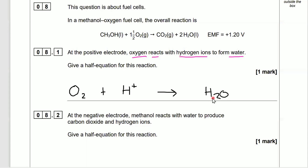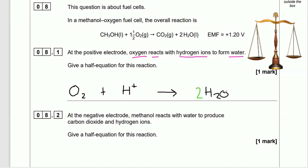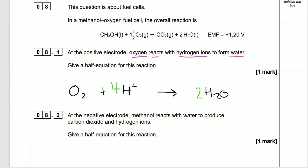Let's balance this up. Looking at the water, I've got one oxygen on the left and two in the products, so I'll start there. Put a 2 in front of H₂O to make two oxygens. That means I need a 4 in front of H⁺ to give four hydrogen ions. If I'd started by balancing hydrogens first, I'd have had to rub it all out — so starting with oxygen is easier.